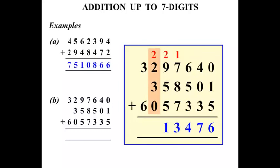2 plus 2 is 4 plus 3 is 7. And we have 0 to add so it stays as 7. And finally 3 plus 6 is 9. So our answer there 9,713,476.